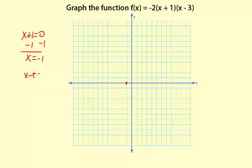x minus 3 equals 0. Add 3 to both sides. x equals 3. There's your other one.